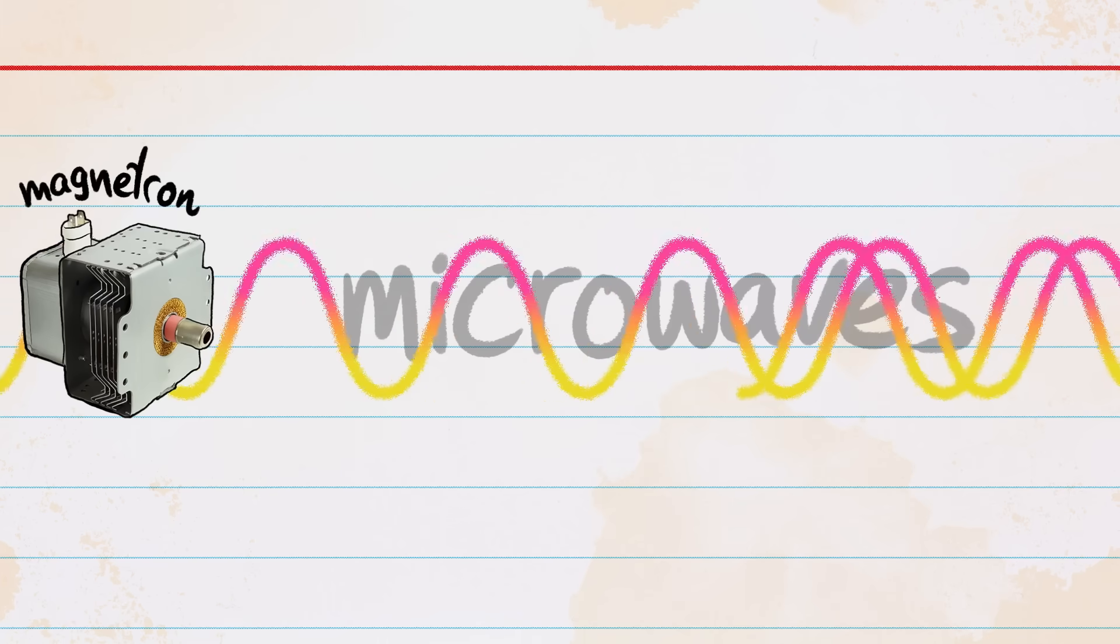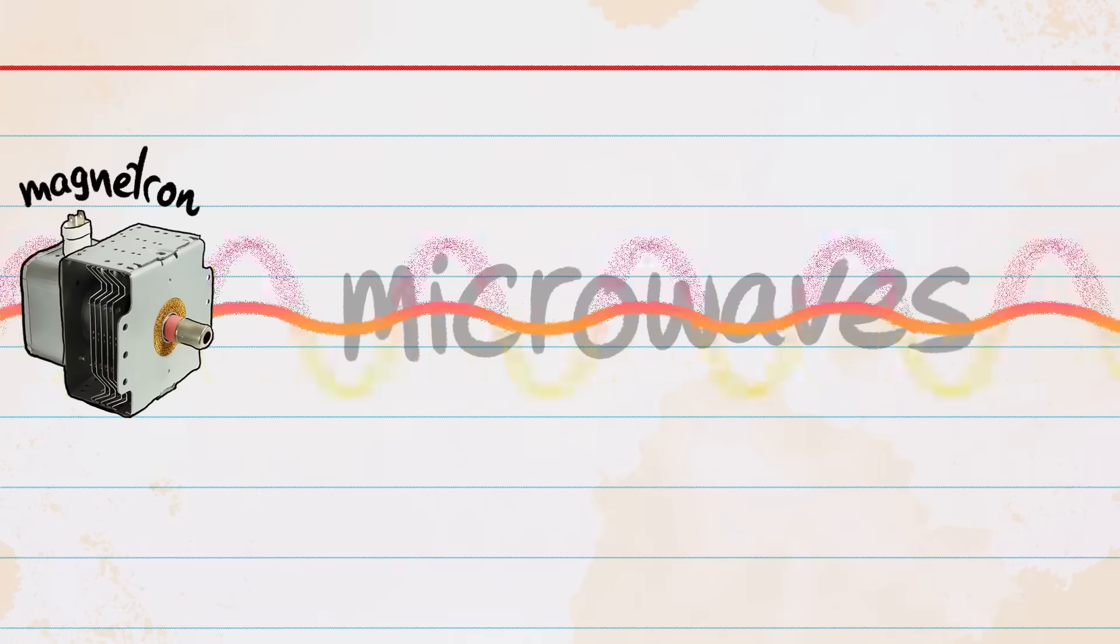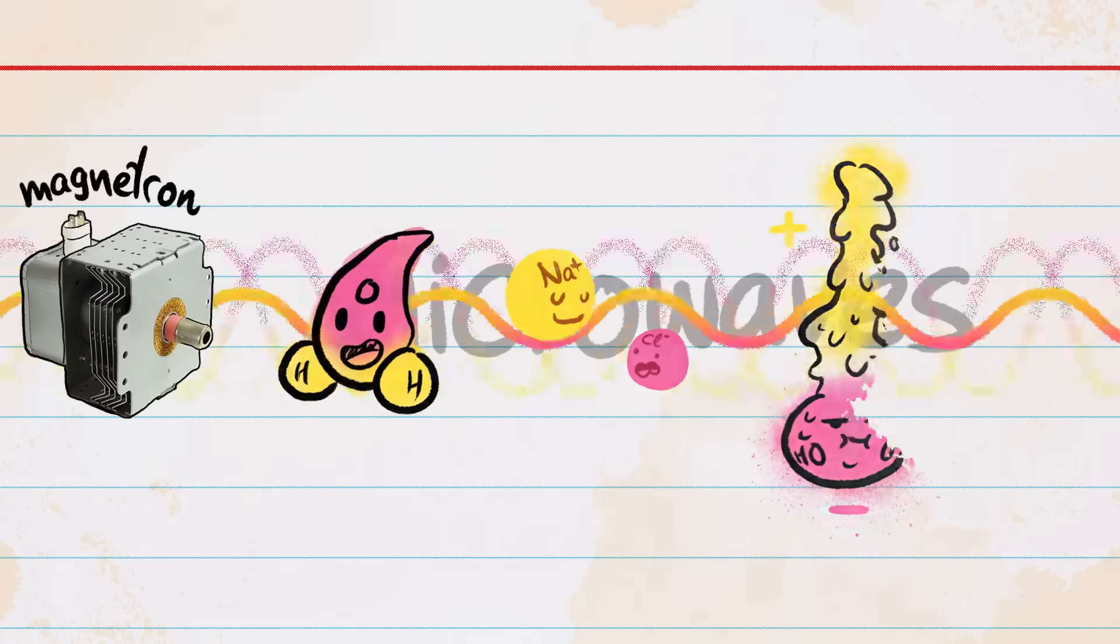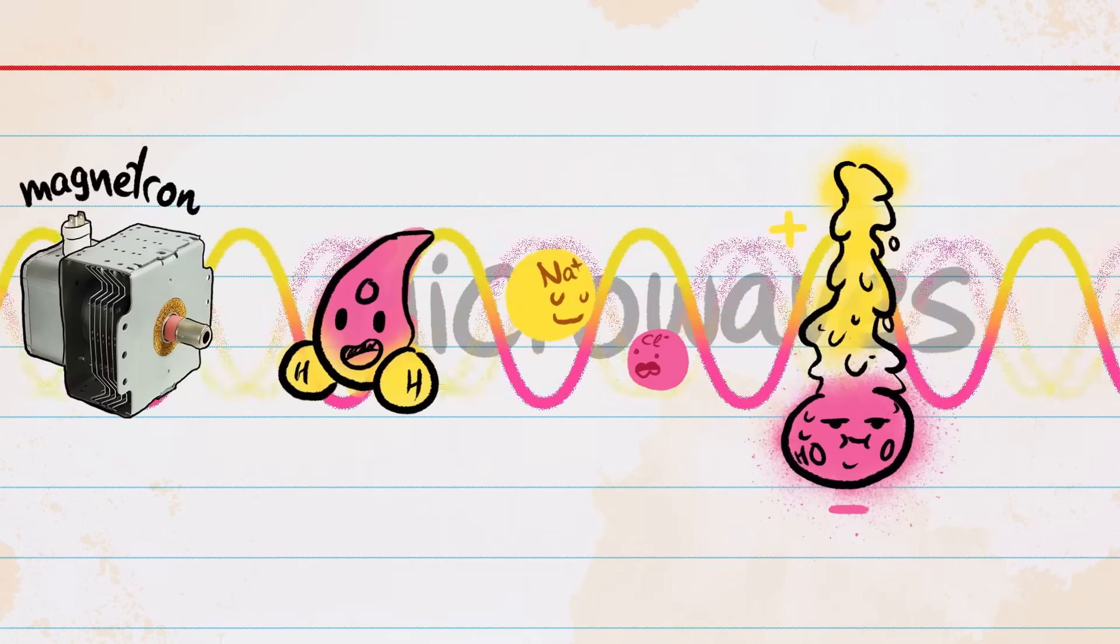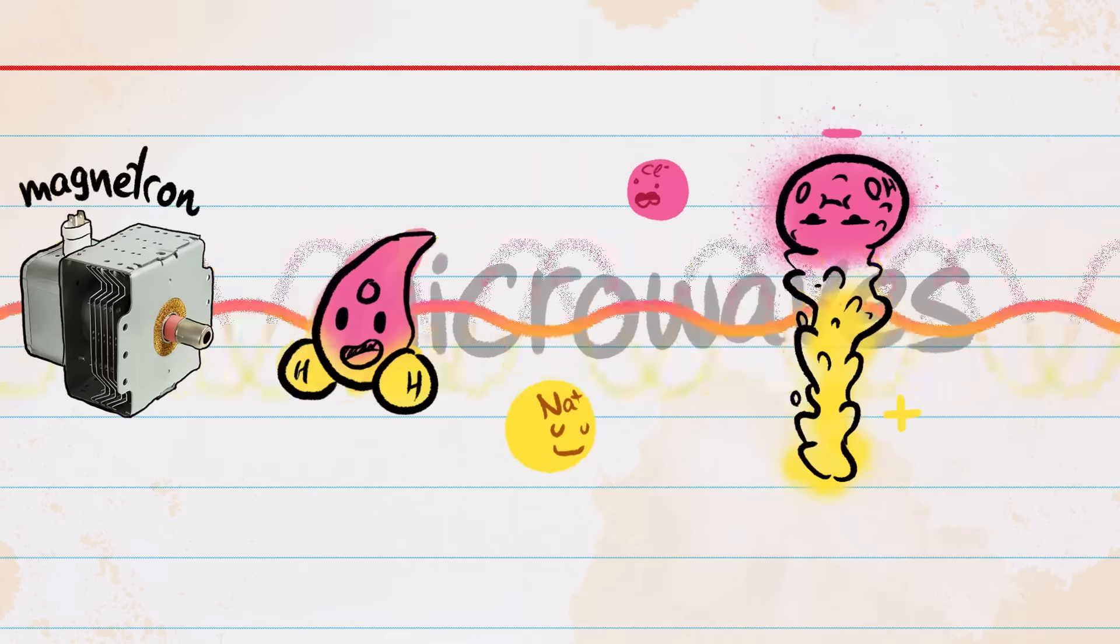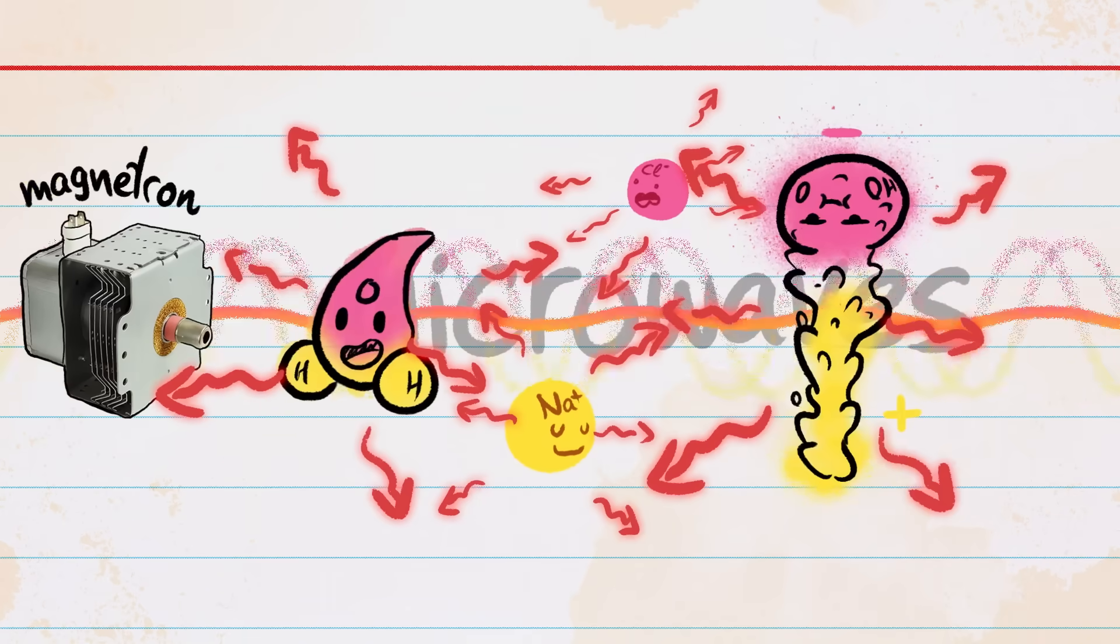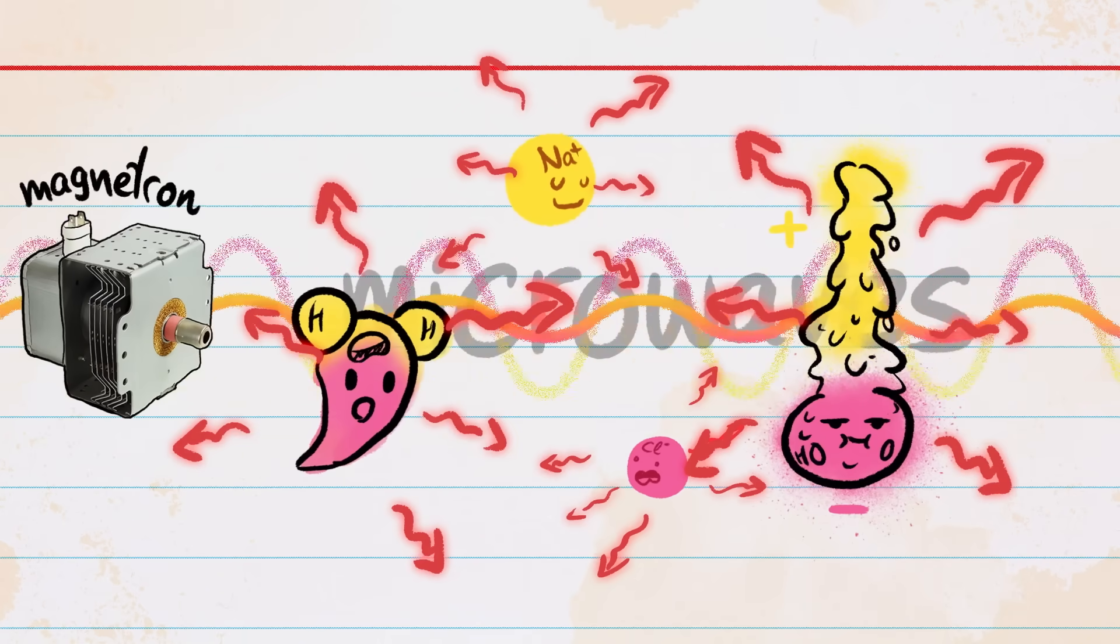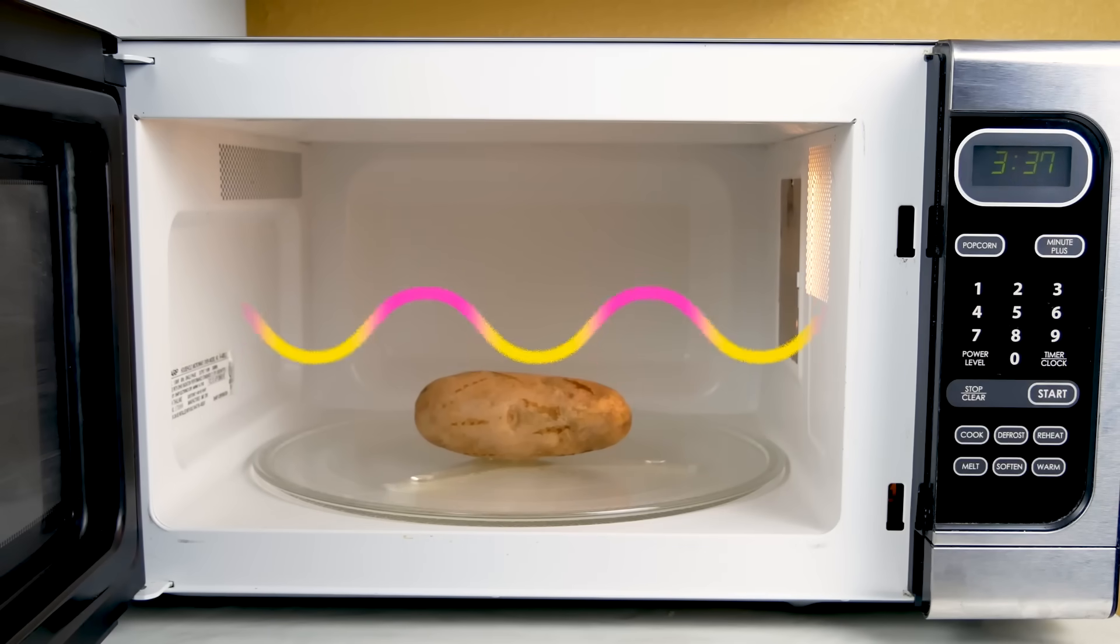The waves bounce back and forth inside the cavity, blending into an electromagnetic field that flips back and forth super fast. When the field meets up with certain types of molecules in food, like water, salt, and fats, it pulls the molecules into alignment. And as the field flips, it pulls the molecules the other way. The result of lots of these molecules jiggling back and forth billions of times a second is heat. That's how food gets hot in a microwave.